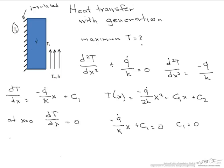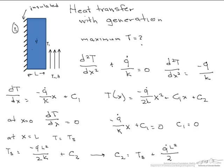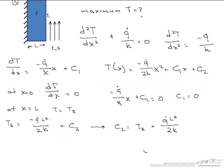Next we say at x equals L, where L is the length of this wall, our temperature equals some constant surface temperature. So now Ts equals minus Q dot L squared over 2k plus our second constant. This allows us to solve for our C2. All we did here was substitute Ts for our temperature and L for our x.